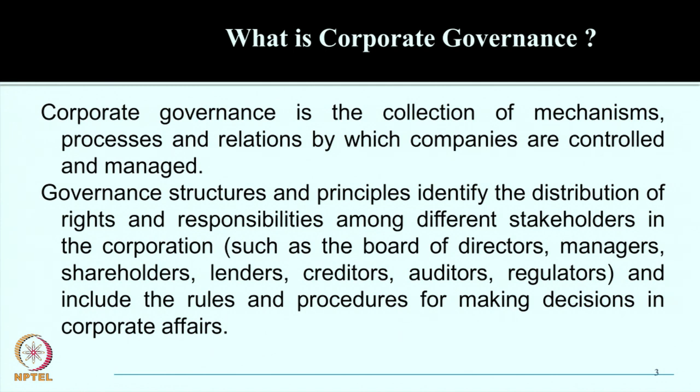Governance structures and principles identify the distribution of rights and responsibilities, because there are various stakeholders in the company. The owners of the company are the shareholders. But shareholders are large in number and spread everywhere — they are not all in one place. For a private company, the number of shareholders may be small: 2, 3, 4, 5, 10. But for a public company, there are lakhs of shareholders located in different cities, and for bigger companies, they are spread all over the globe.